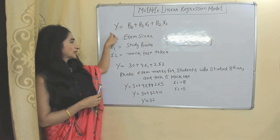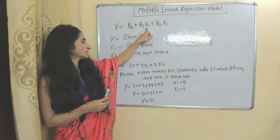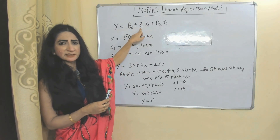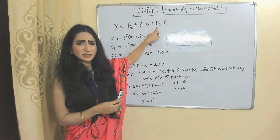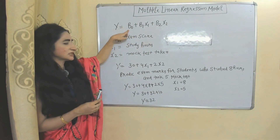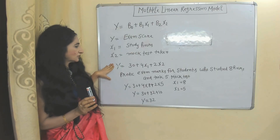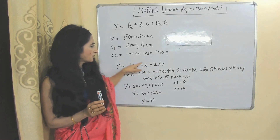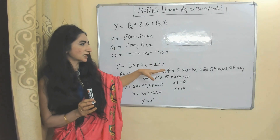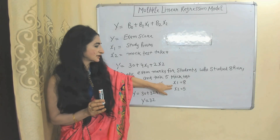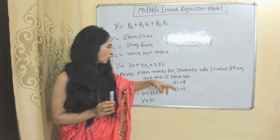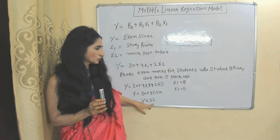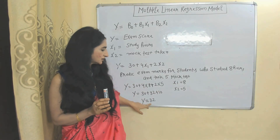Example of a multiple linear regression equation: dependent variable is exam score; first independent variable X1 is study hours with slope Beta-1; second independent variable X2 is mock tests taken with slope Beta-2; and the intercept is Beta-0. Suppose the model calculates intercept = 30, Beta-1 = 4, and Beta-2 = 2. To predict exam score for a student who studied 8 hours and took 5 mock tests: X1 = 8, X2 = 5. Substituting into the equation gives 32, meaning those students are expected to score 32 marks.